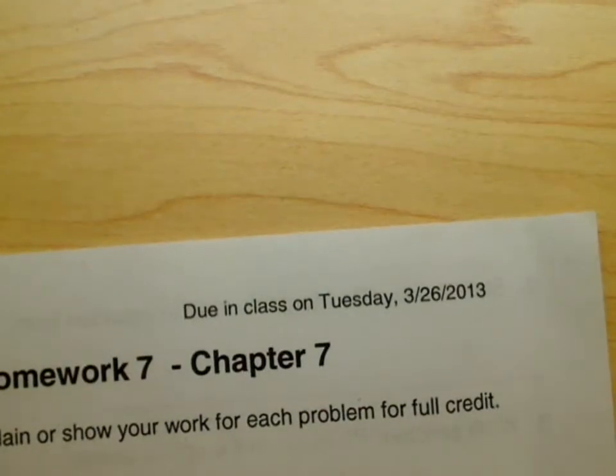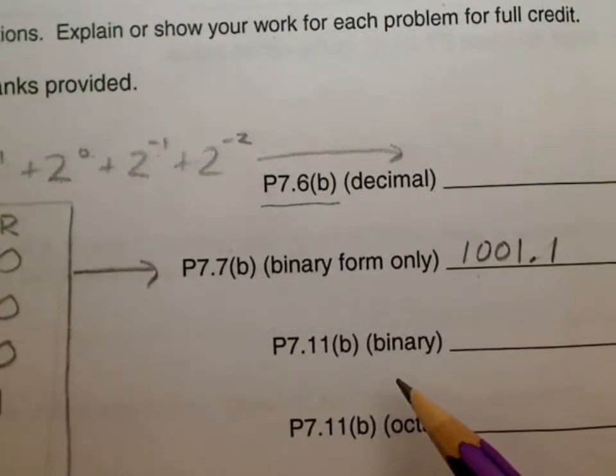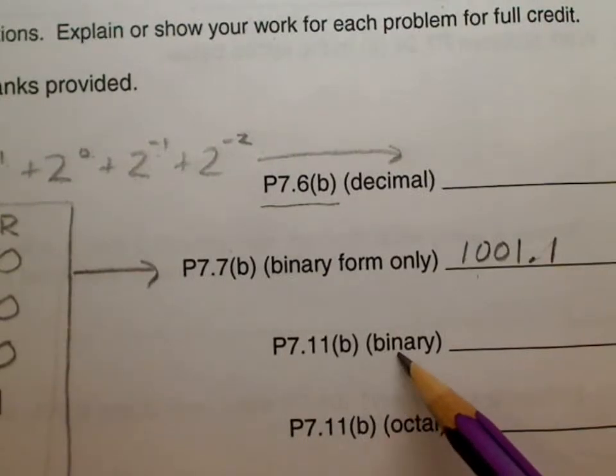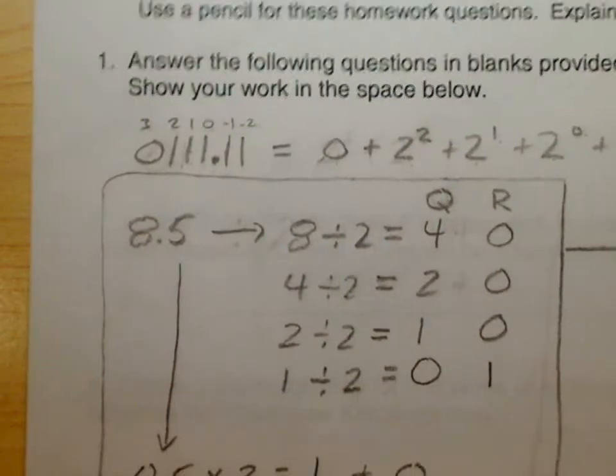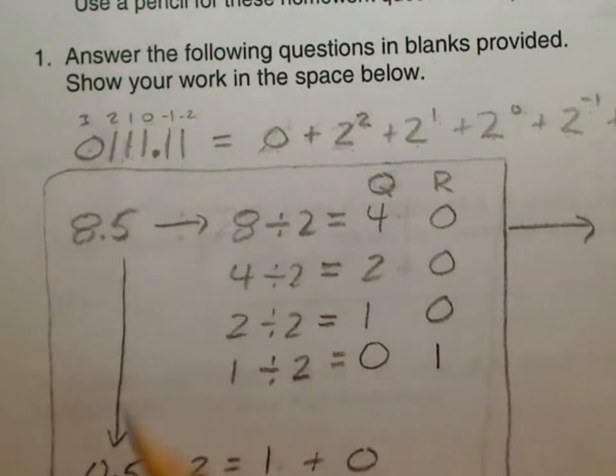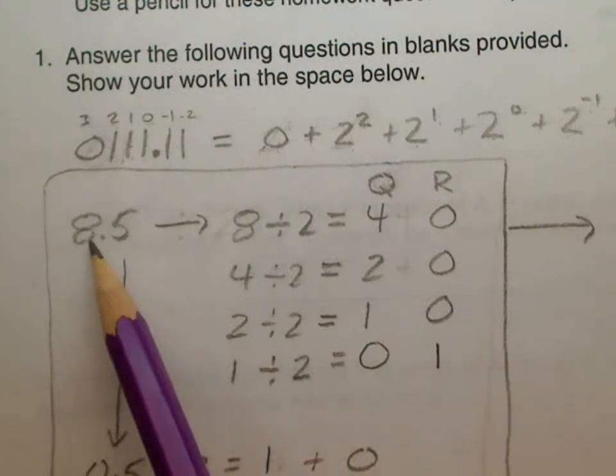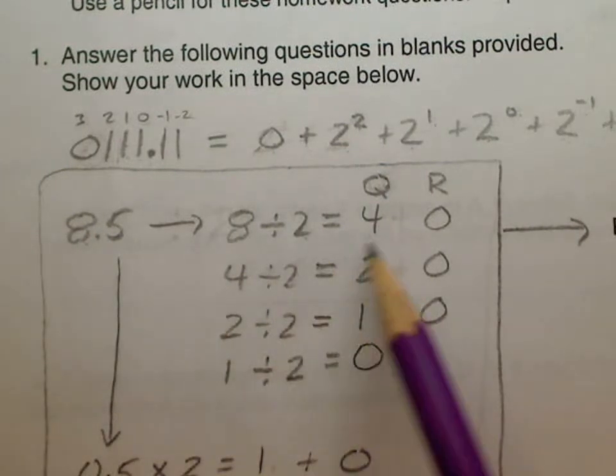This is problem 7.7B right here and we're going to convert a decimal number over to binary. If you look at the problem statement it has a very simple decimal number right here, 8.5. So you break it up into two parts, first of all you take the 8 and divide it by 2.